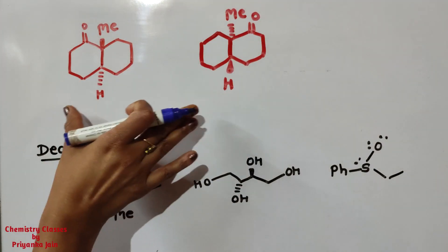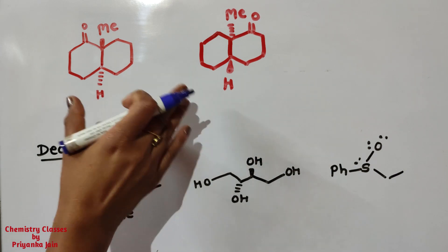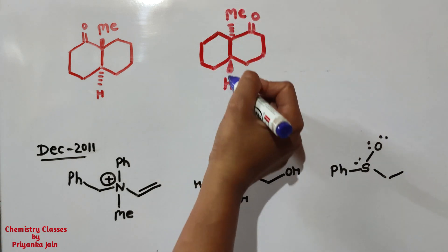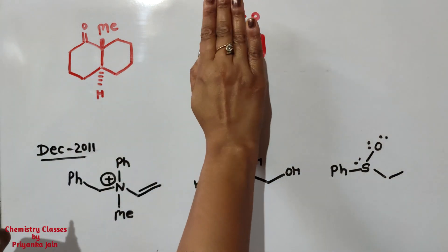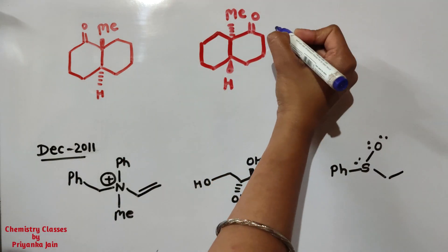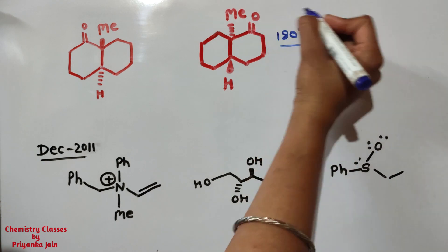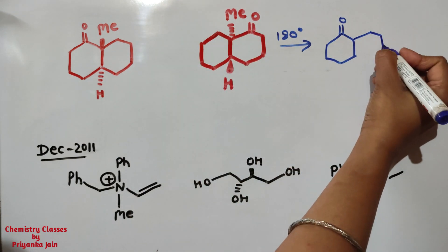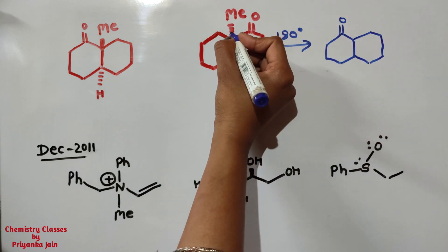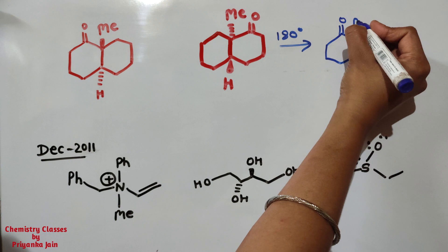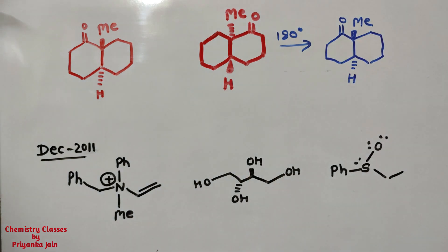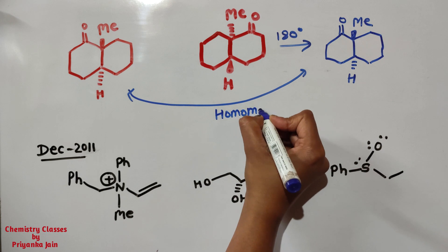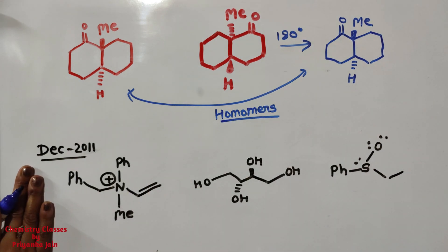Now see this question — we have to identify whether two molecules are homomers, enantiomers, or diastereomers. Rotating the first molecule 180 degrees about its axis: the O comes here, the ring flips here, the methyl group that was below the plane comes above the plane, and the other goes below. We get the same structure as the second — both molecules are identical, so they are homomers.